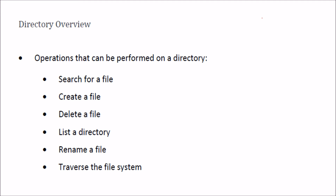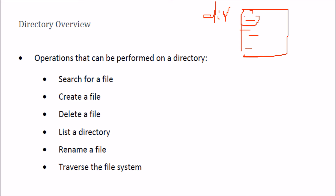Each partition contains information about the files within it — such as name, location, size, and type — stored in a device directory. The operations you can perform on a directory include: search for a file, create a file, delete a file, list a directory, rename a file, and traverse the file system.